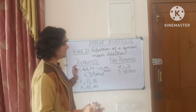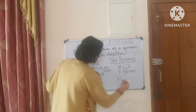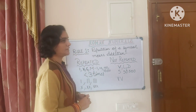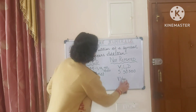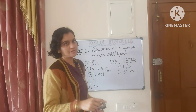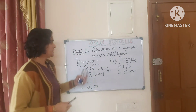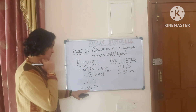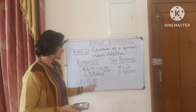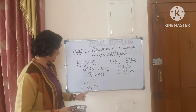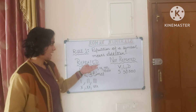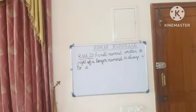For example, I cannot show 10 by writing V five times — that will never be 10. This is not the rule to form a Roman numeral. V, L, and D wherever they are used in a Roman numeral, they need to be used only once. So to summarize Rule 1: repetition of a symbol means addition; repetition can be done a maximum of 3 times; and V, L, D can never be repeated.